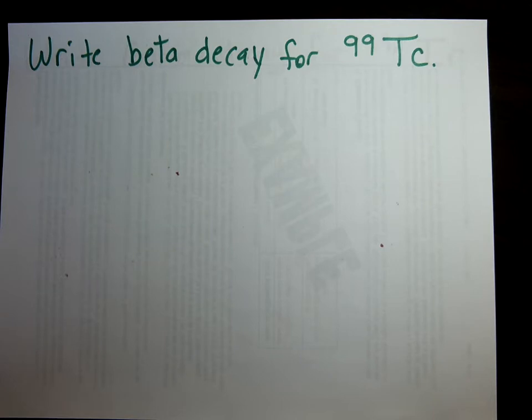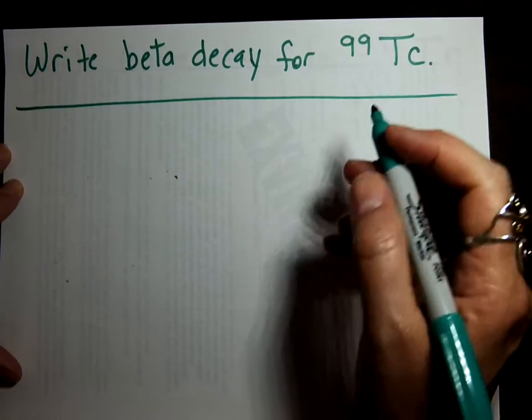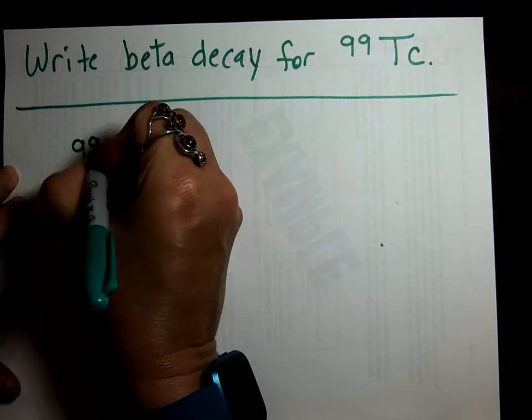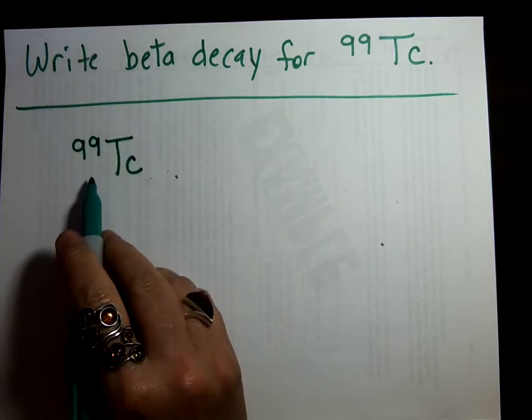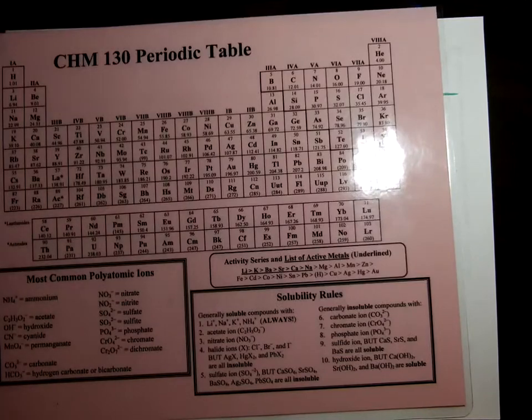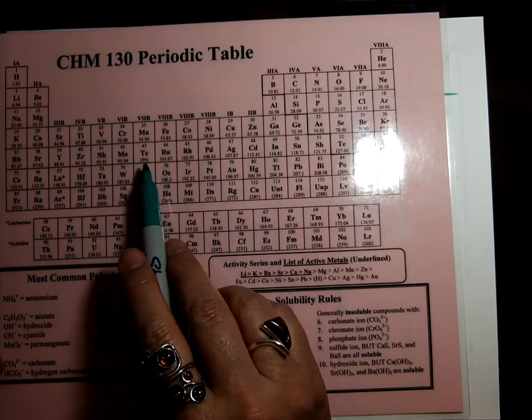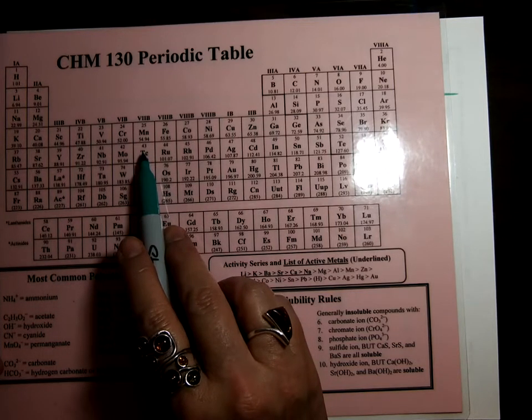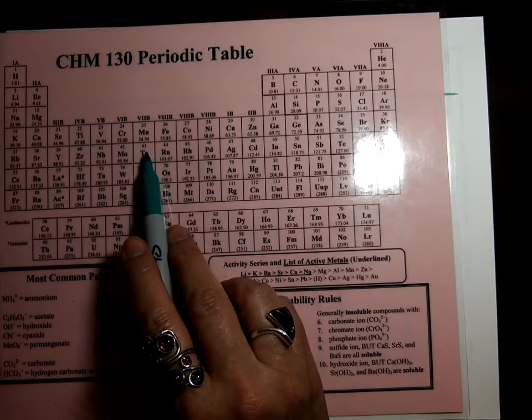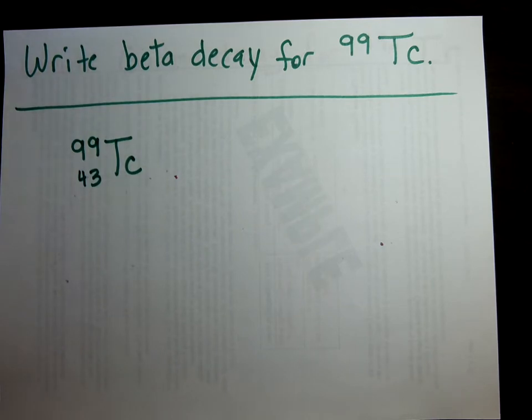Let's write a beta decay reaction for 99 technetium. So 99 is the upper number, which is the mass number. So we need to figure out the proton numbers. Where do you look for proton numbers? You're correct if you said the periodic table. So we're looking for T-C. And there it is. T-C is number 43. That's how many protons it has. So that is the bottom number. 43 protons in T-C, technetium.